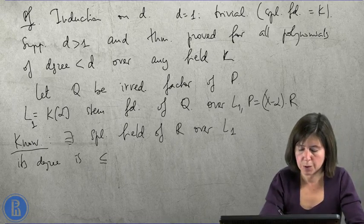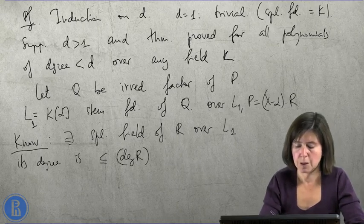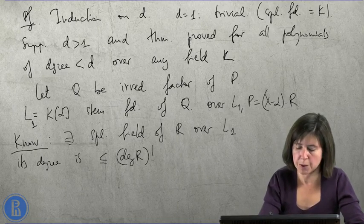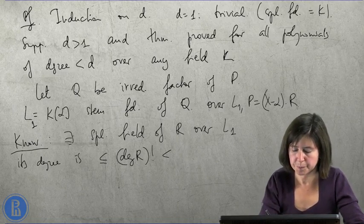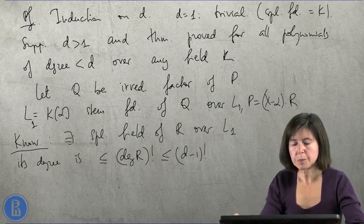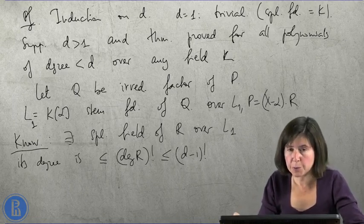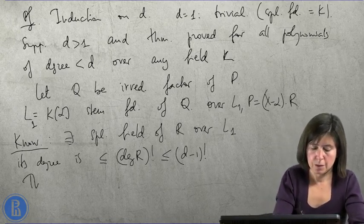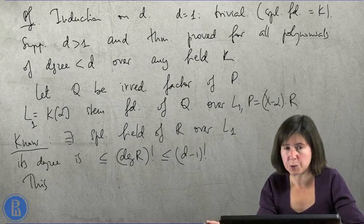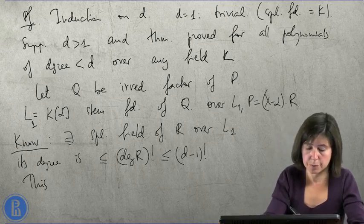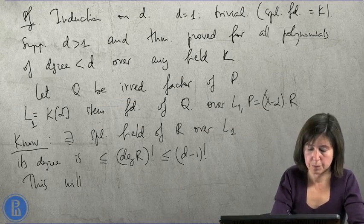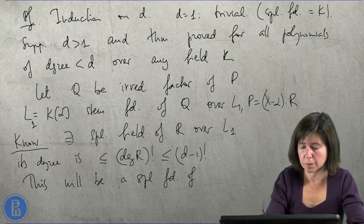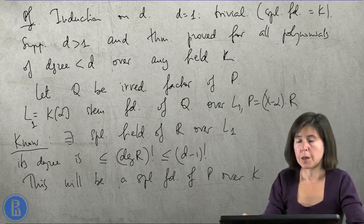And we know that we have a splitting field of r over L1. The degree of r is at most d minus 1. Now, this splitting field of r over L1 will be also a splitting field of p over k.